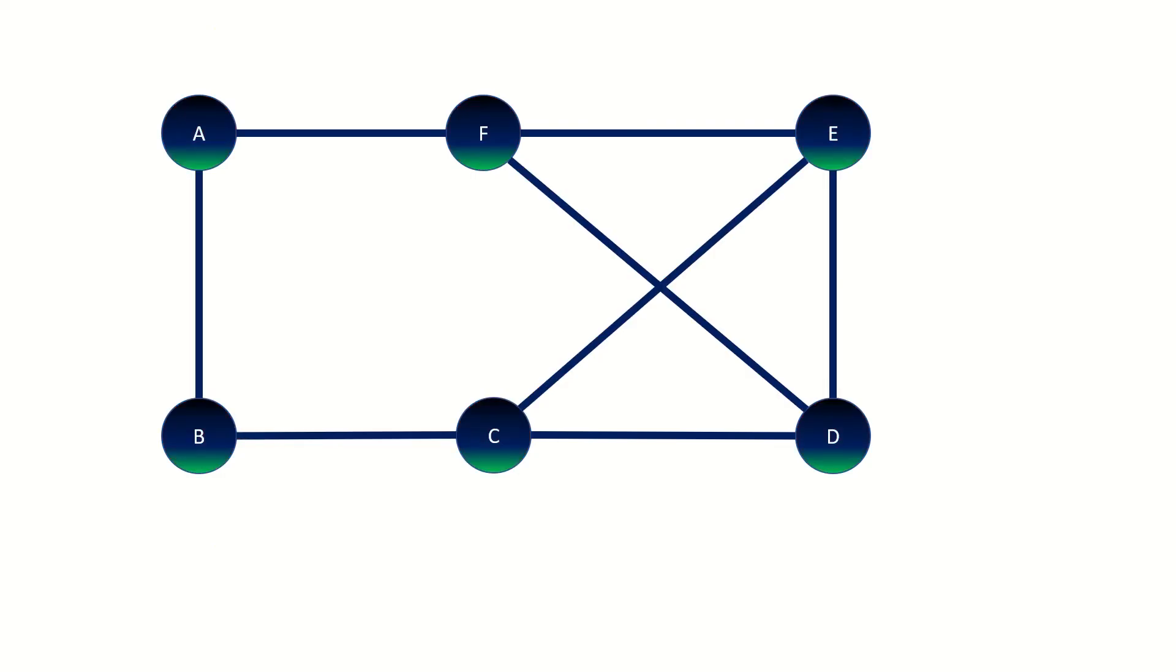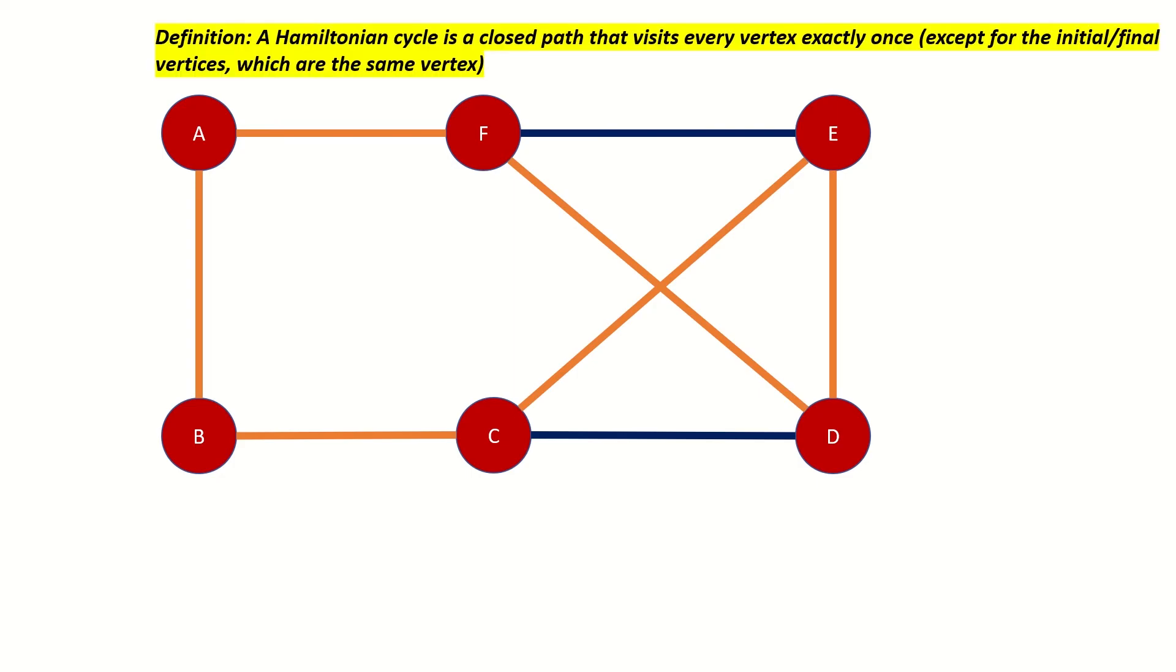A Hamiltonian cycle, on the other hand, is a closed path through a graph that visits every vertex exactly once. In other words, it starts and ends on the same vertex and visits every vertex in the graph besides its initial vertex exactly once. If a graph has a Hamiltonian cycle, we call it a Hamiltonian graph.